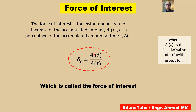This equation, delta t equals a prime t divided by a t. Here, a prime t is nothing but the first derivative of a t. At is the accumulated amount at time t, and the force of interest is the instantaneous rate of increase of accumulated amount — that is a prime t — as a percentage of the accumulated amount at time t, a t.